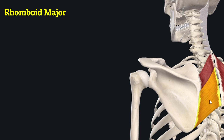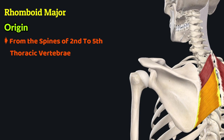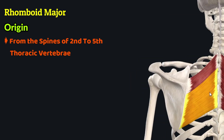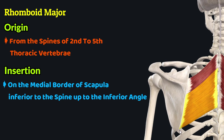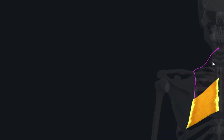The rhomboid major muscle originates from the spines of the second to fifth thoracic vertebrae. Just like the rhomboid minor muscle, the fibers of the rhomboid major muscle travel inferolaterally to insert on the medial border of the scapula, inferior to the spine of the scapula, down as far as the inferior angle of the scapula.